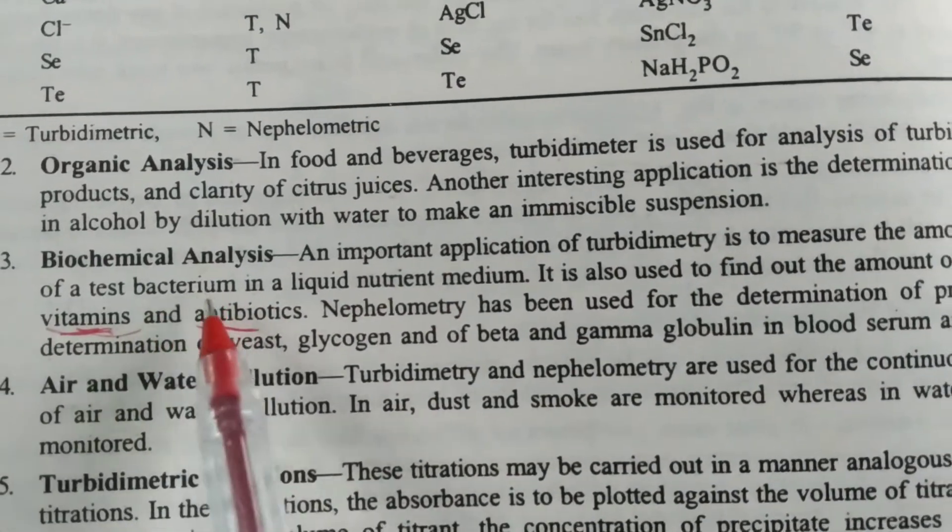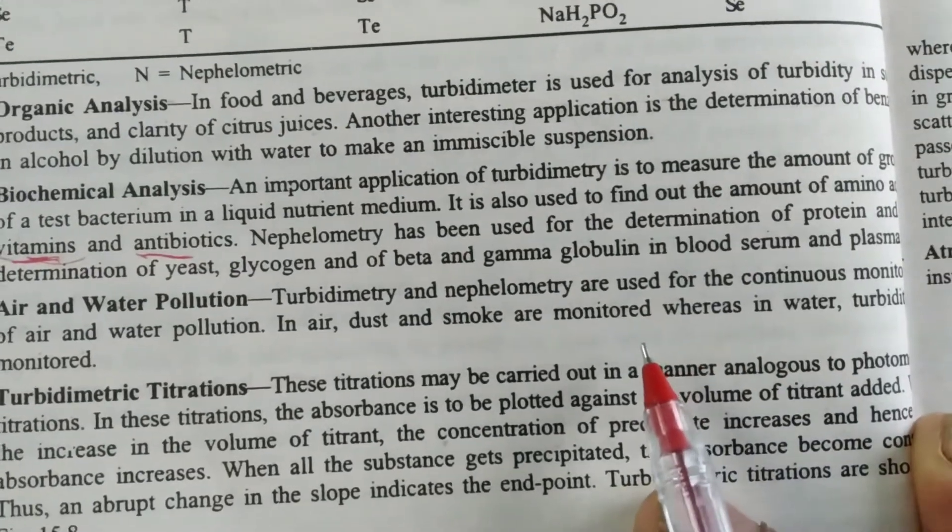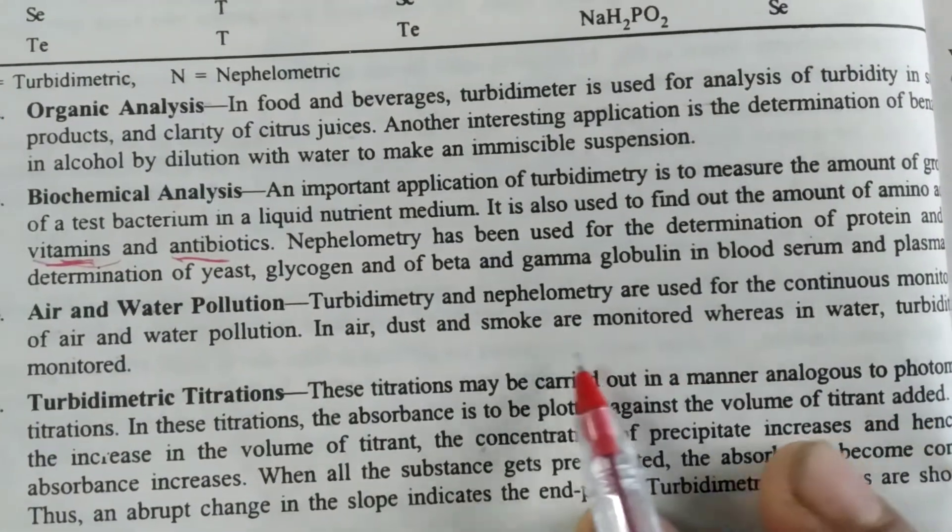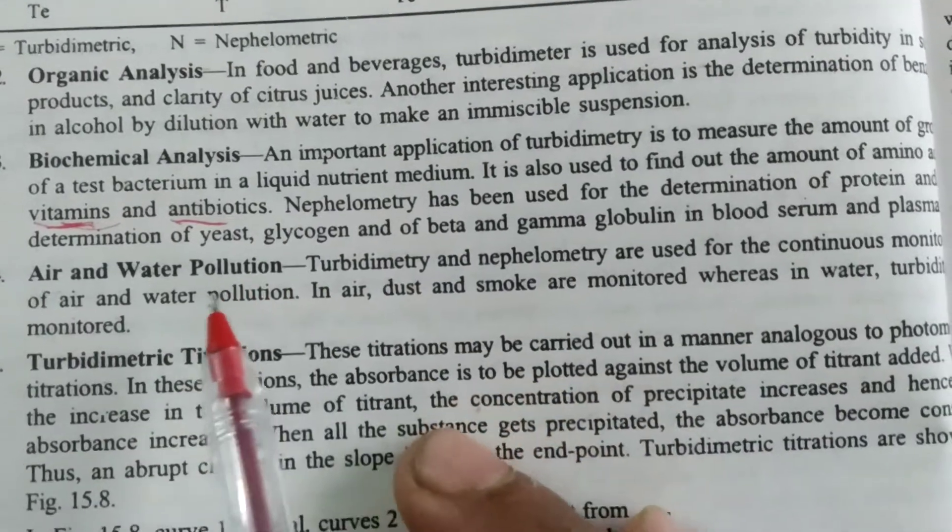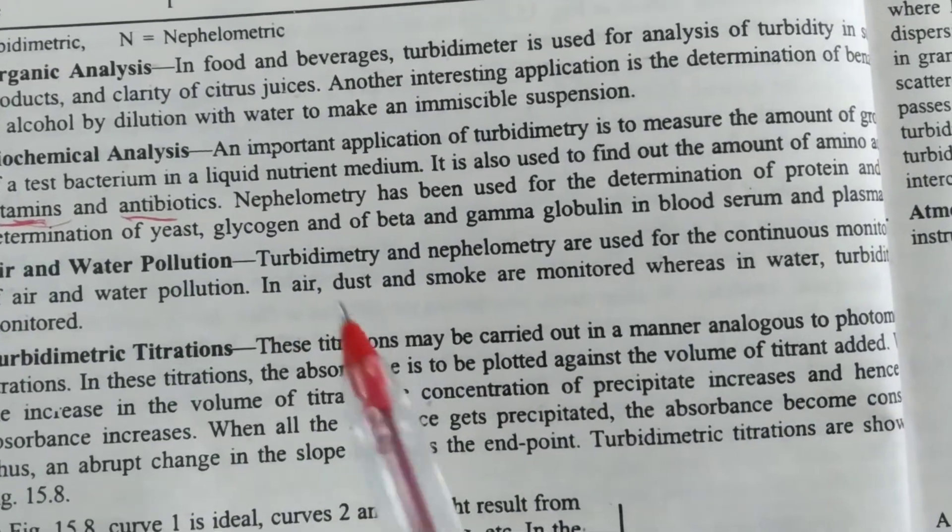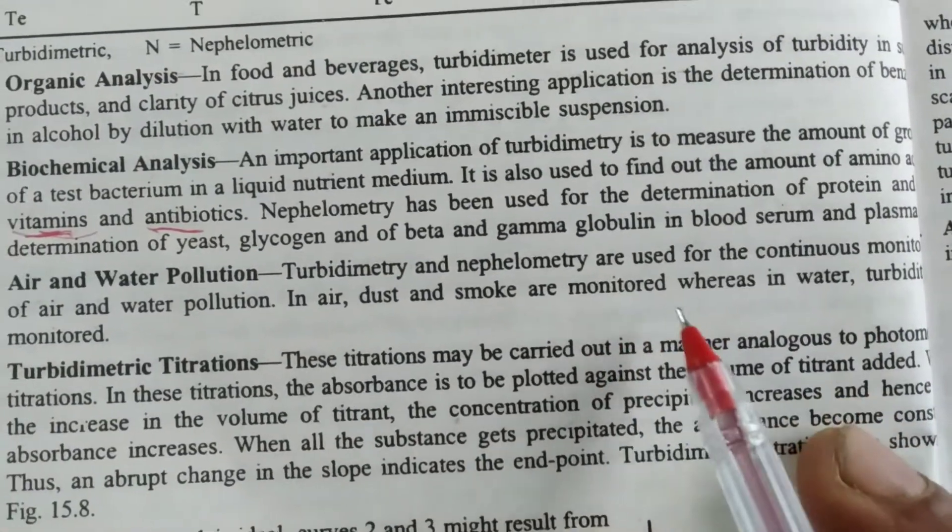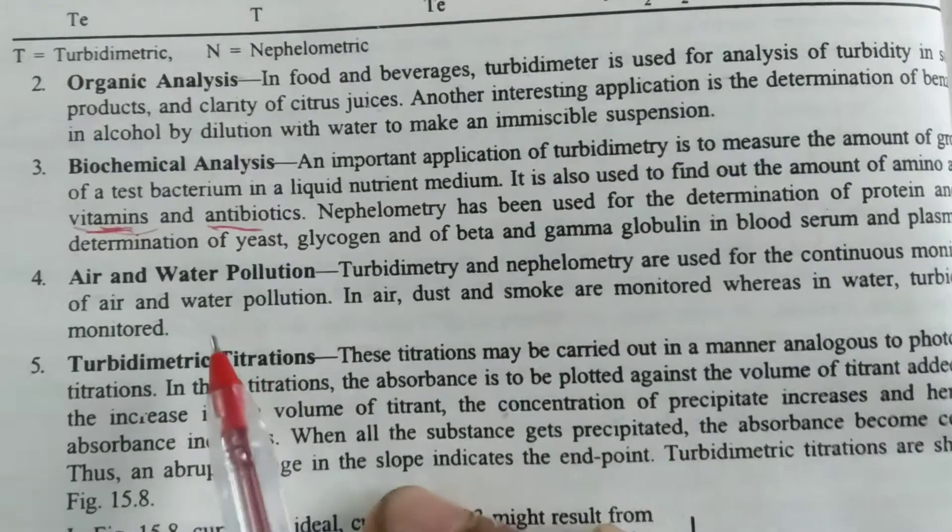For air and water pollution, turbidimetry is used for continuously monitoring air and water pollution. Smoke and dust are monitored.